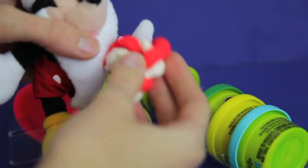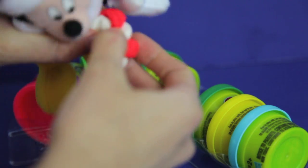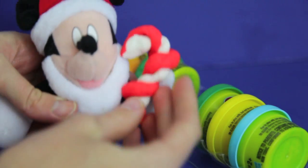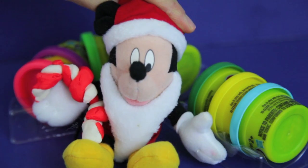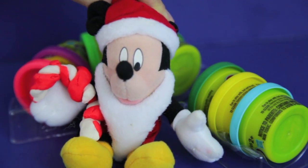Now that I'm done twisting the Play-Doh, all I need to do is bend the top to make it the shape of a cane. There we have it! There's our Play-Doh candy cane!